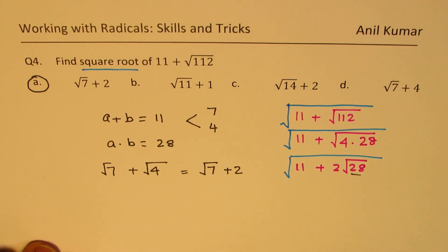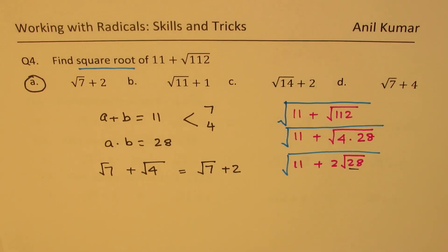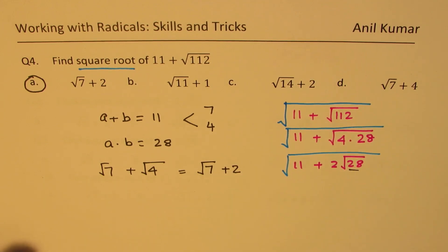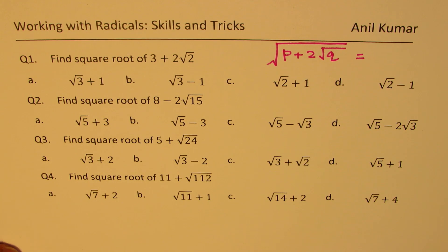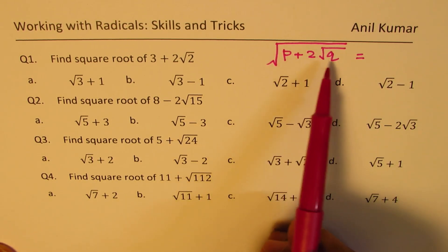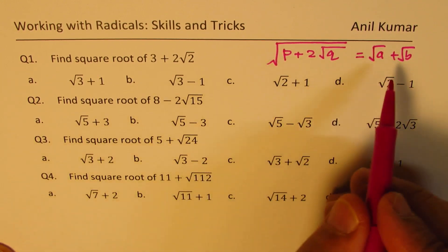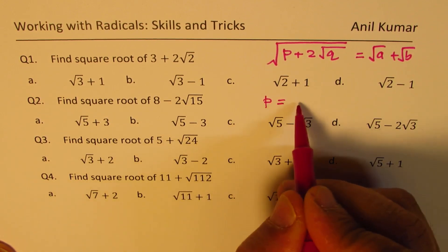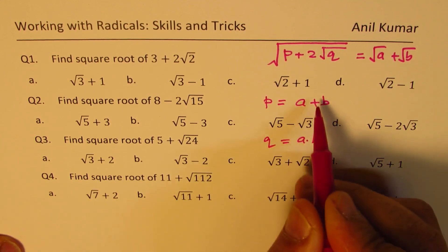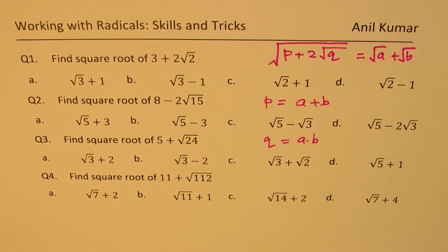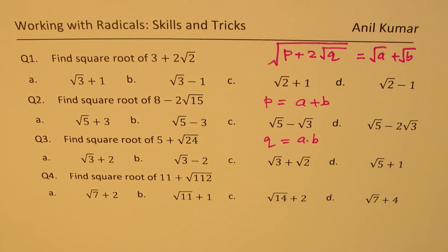Once you understand this strategy, such questions become very easy. Let's review: we start with square root of p plus 2 square root q, and write it as square root of a plus square root of b, where p equals a plus b and q equals ab. This extremely important strategy can be applied to solve many questions on this topic and save a lot of time. Feel free to write a comment, share your views, and if you like and subscribe to my videos, that'd be great. Thanks for watching and all the best.